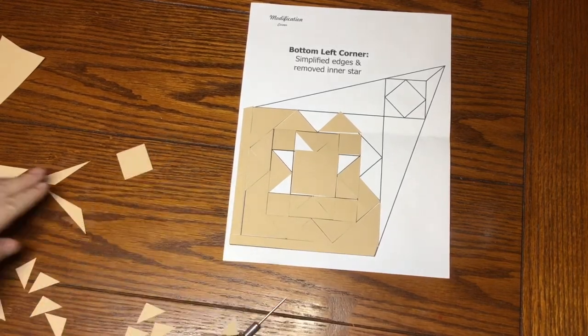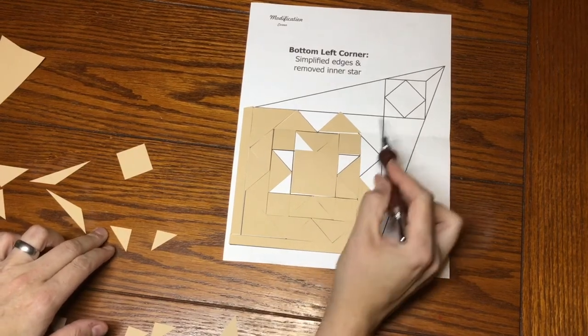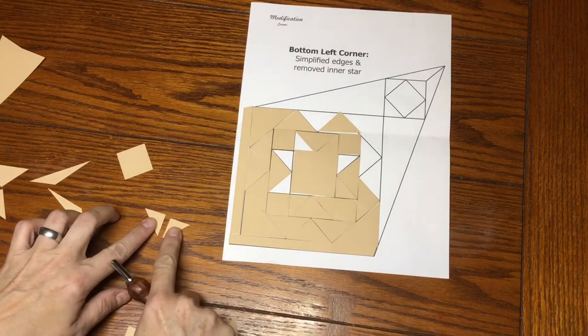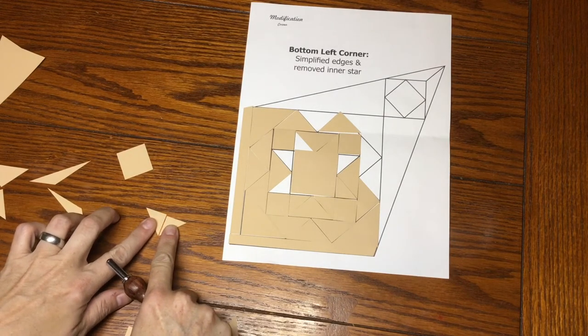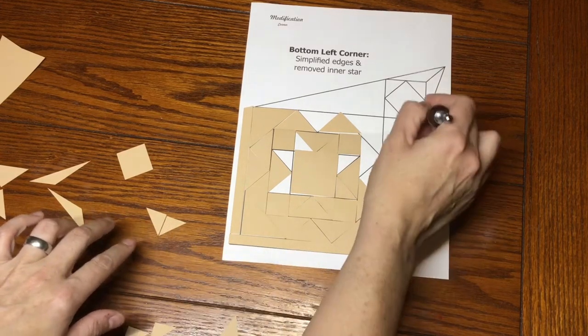And come to find out, we have two sizes of these two triangles. These are a little smaller than these, I mean by a tiny, tiny bit. So if I put these next to each other, you can see that this one's a little shorter than that one. This is the one that goes around this.